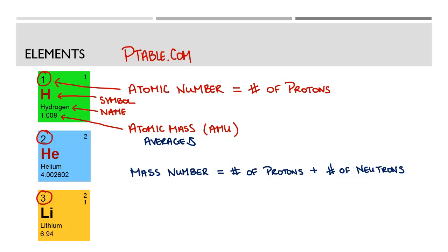Which should make sense because we just discussed that electrons don't have mass or they have very little mass. So the mass number should just be the number of protons plus the number of neutrons.